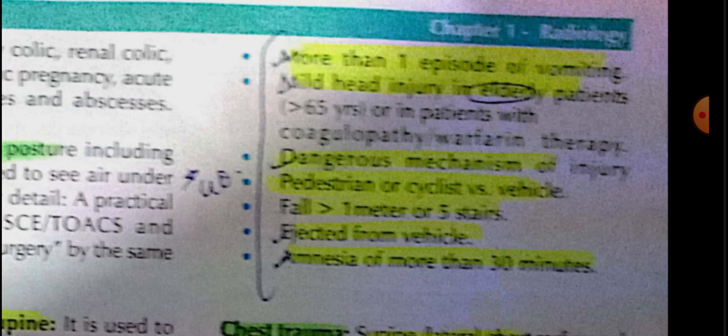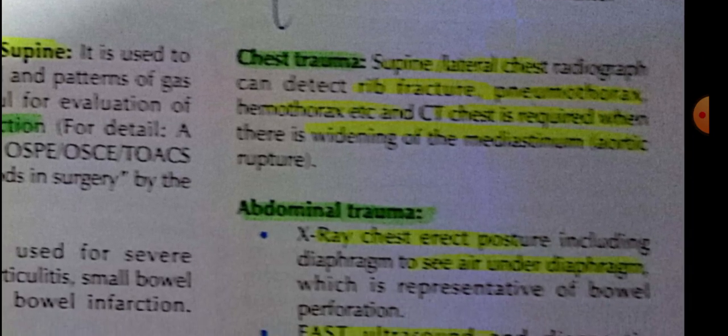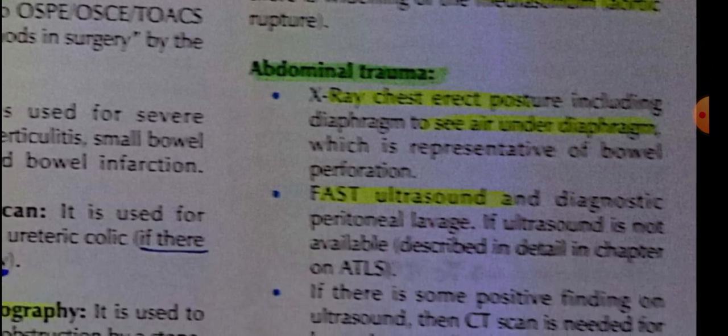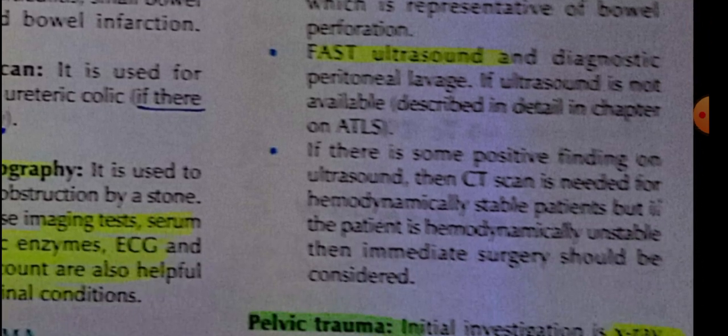Indications for CT scan in head injury include: fracture, focal neurological deficit, or amnesia. For chest trauma patients, we perform chest X-ray supine and lateral views. Rib fracture or hemothorax is detected on chest radiograph. CT chest is also performed. So for chest trauma there are two modalities: radiographs and CT chest. Ultrasound is also used.